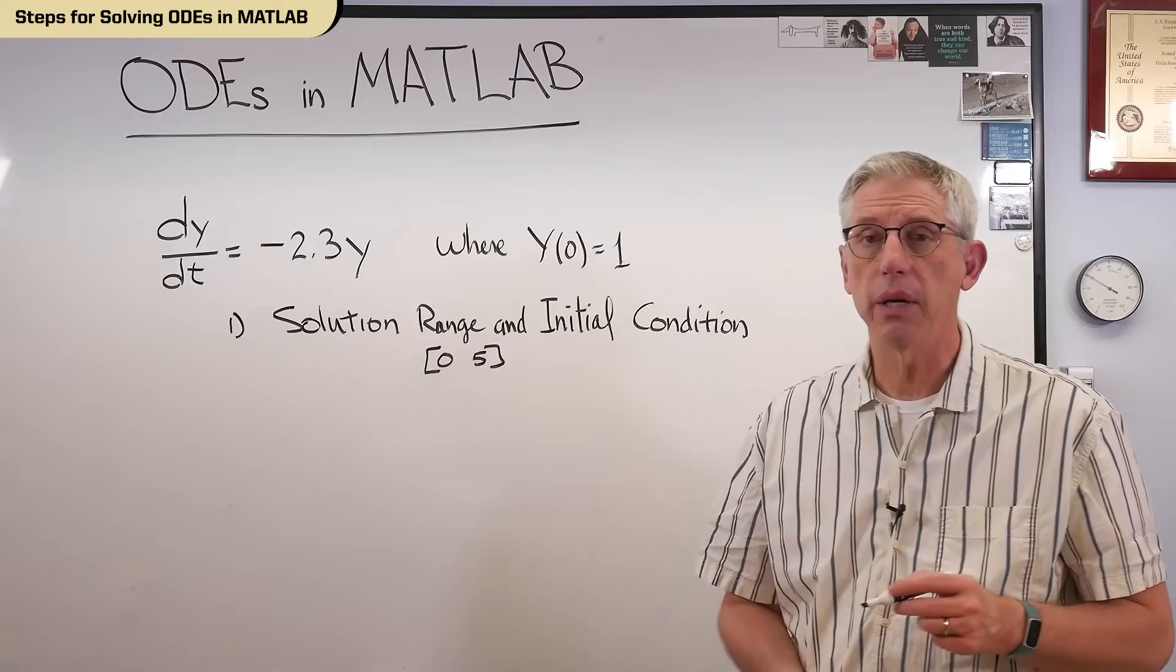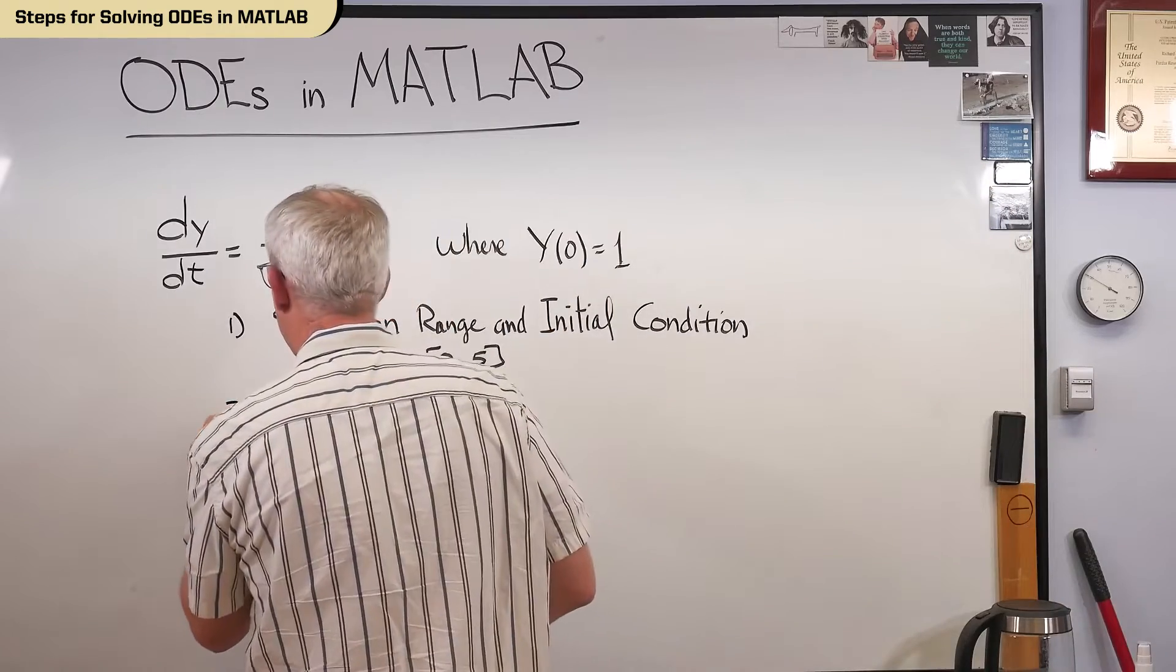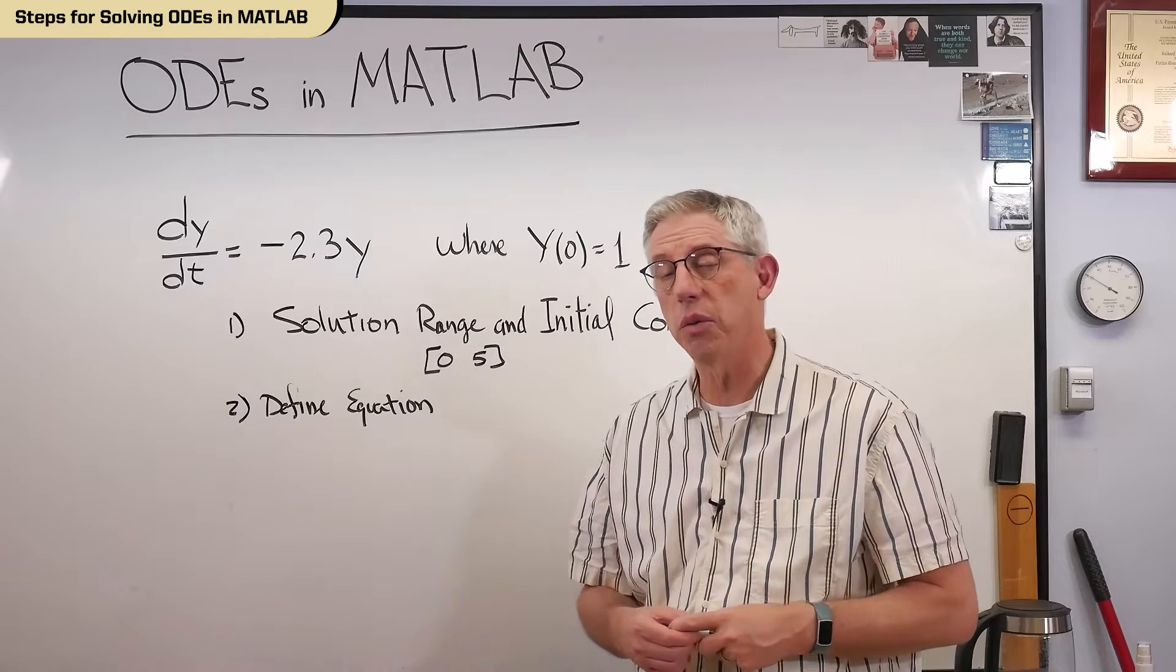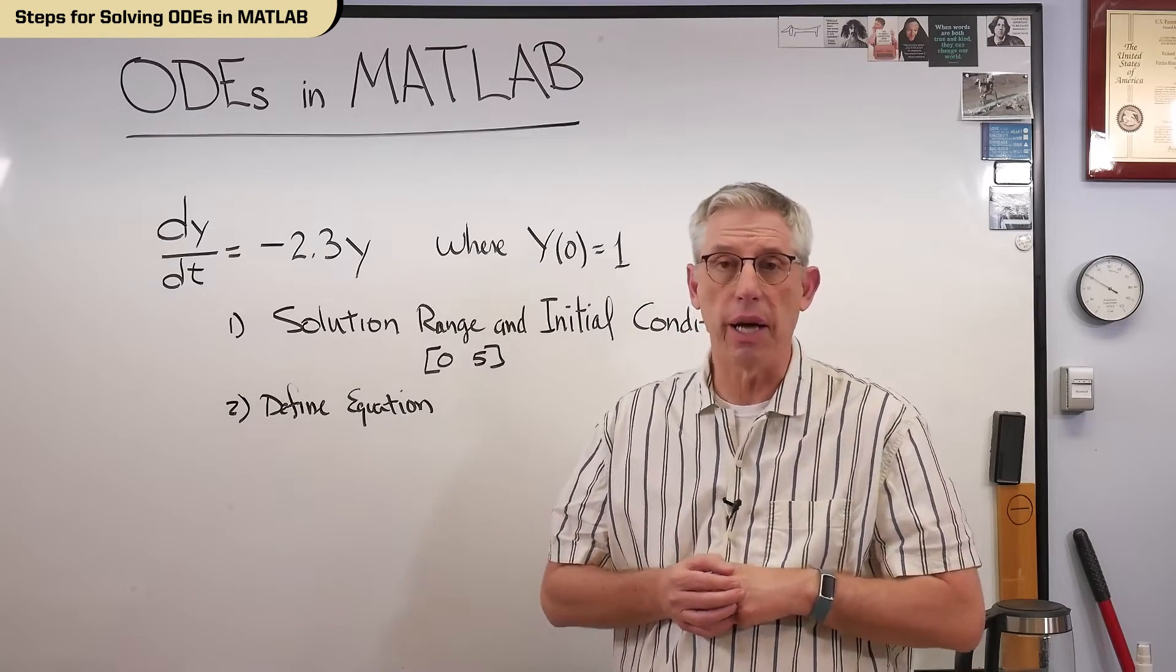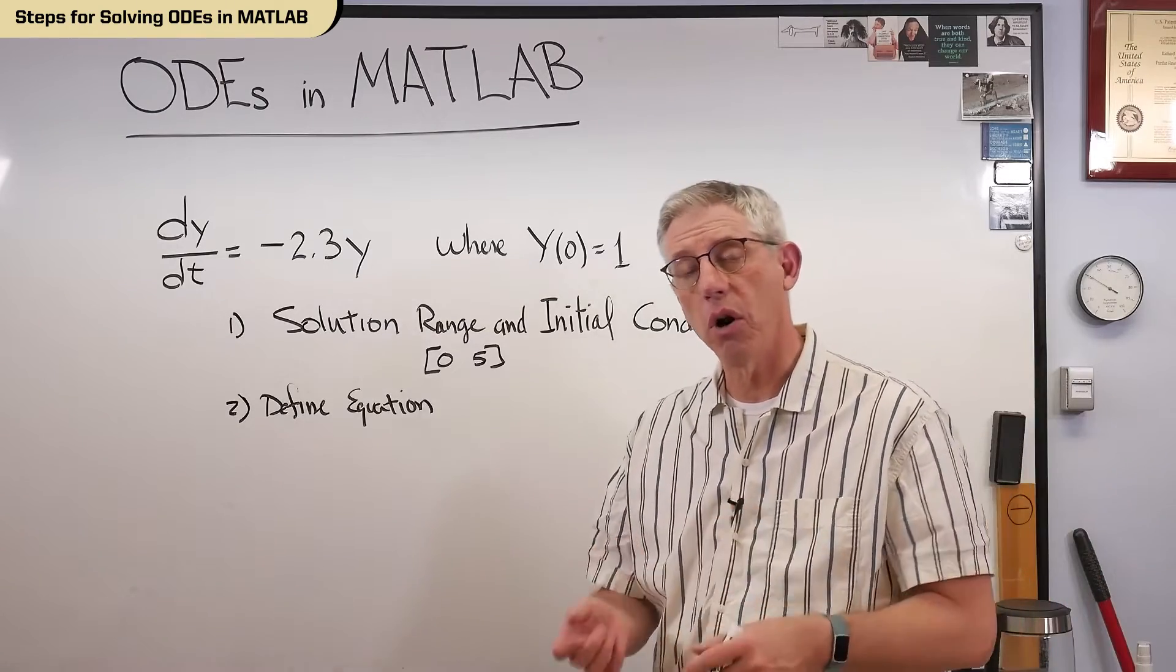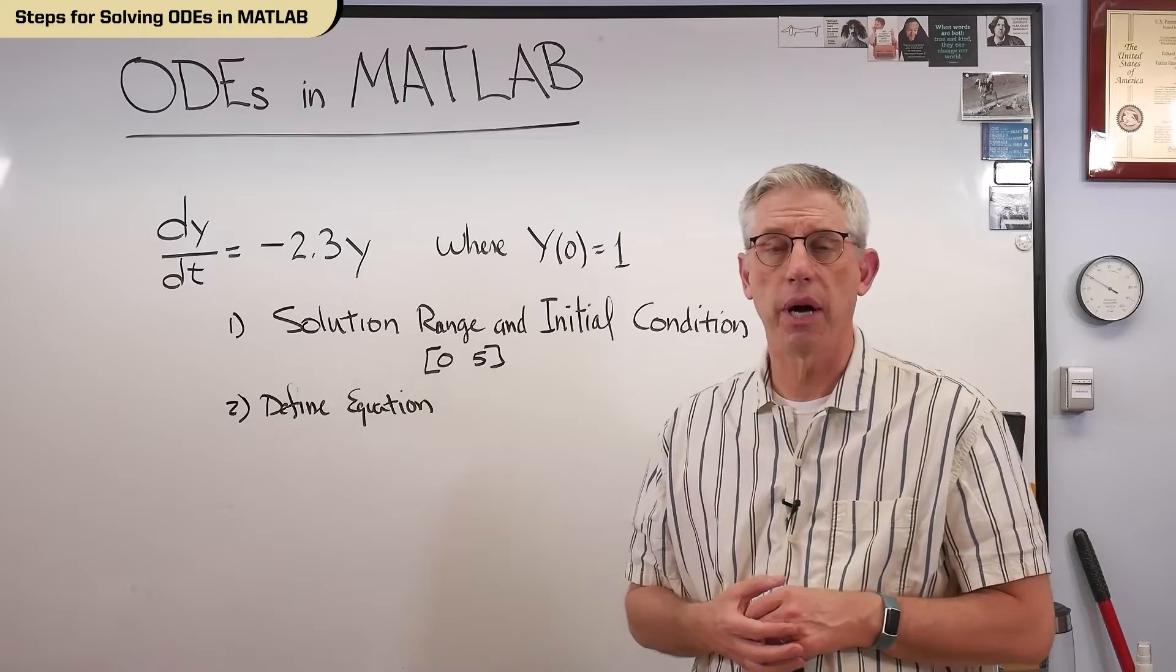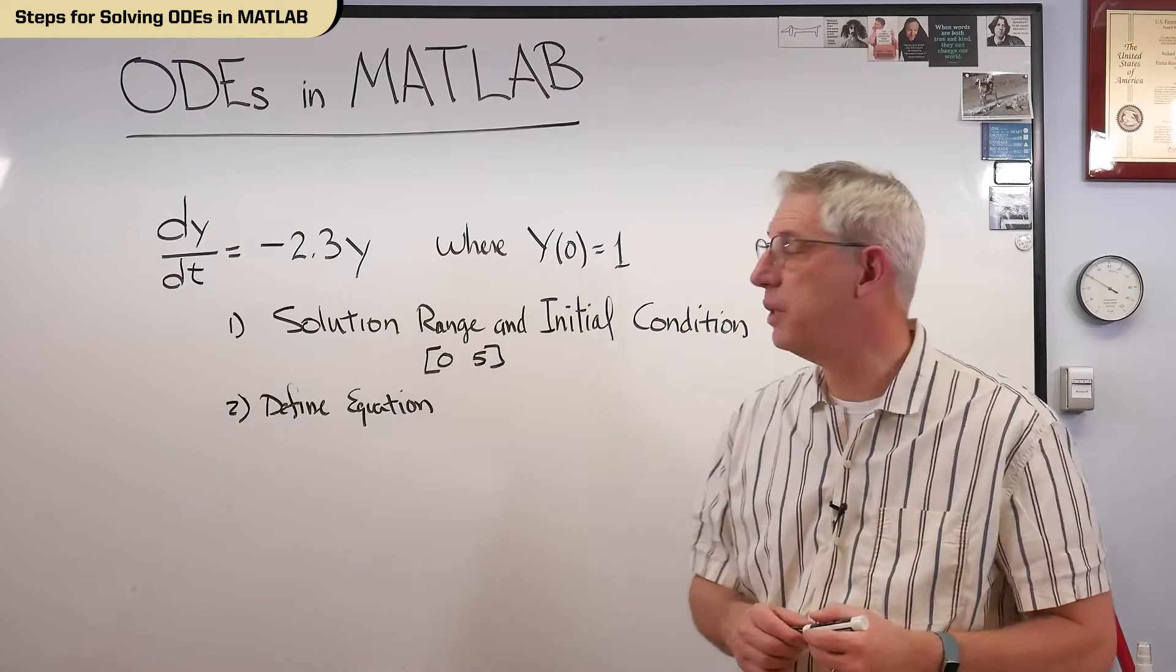Step two is to define the differential equation itself. So, define the equation for MATLAB. Now, there's two different ways to do this. One of them is to write it out as an anonymous function, and the other one is to write a little m file where the differential equation can live. And so, when you call the differential equation solver, you're either going to refer to that anonymous function or call that function that defines the equation. And I'll show you both solutions here.